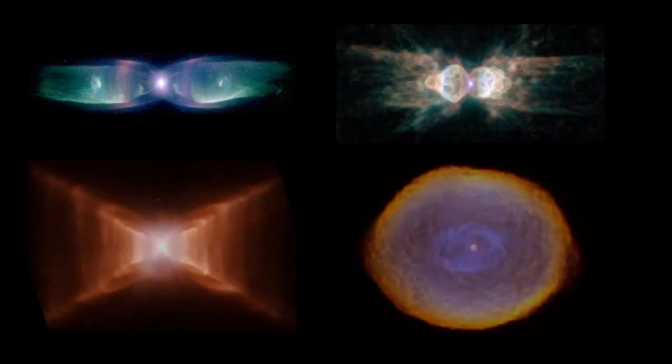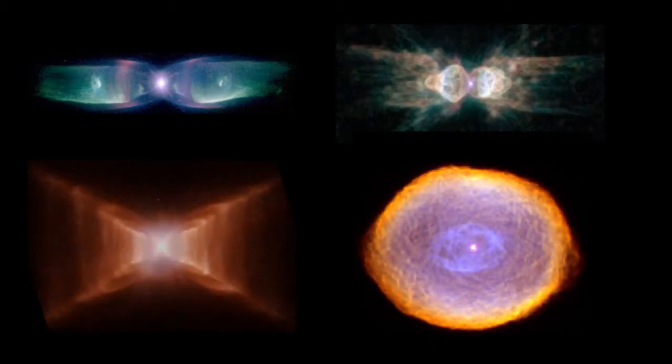Astronomical nebulae are among the most complex and visually appealing phenomena known outside the bounds of the solar system, but because only one view can be seen from Earth, their three-dimensional structure is often uncertain. We present a new method to reconstruct volumetric models of such nebulae from single images based on a symmetry assumption.